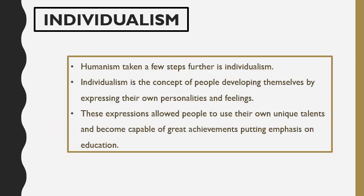Coming from humanism, we move to individualism. This takes humanism a few steps further and goes more in depth. Individualism doesn't focus on all human beings as one, but more so on the individual themselves. Each person was encouraged to start expressing their own personalities and feelings in ways that they wanted to. By doing this, individuals were allowed to use their own unique talents and become capable of great achievements — educating themselves with literature, art, and civilization learned from the Greeks and Romans. Science and technology also became important, as they moved away from religion to achieve more.